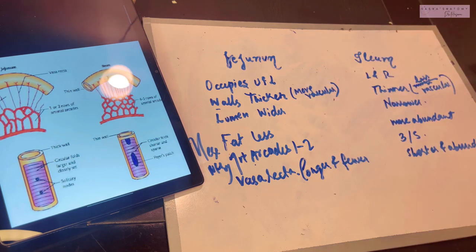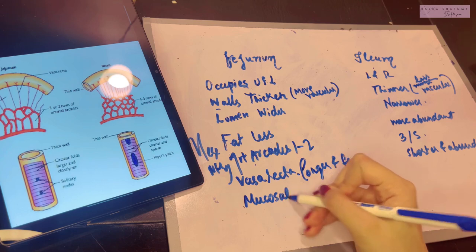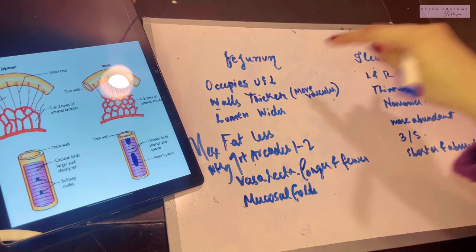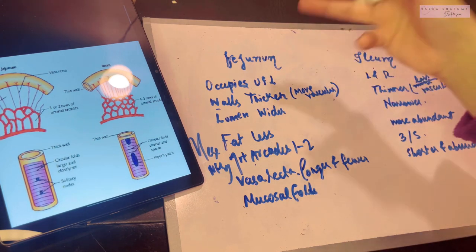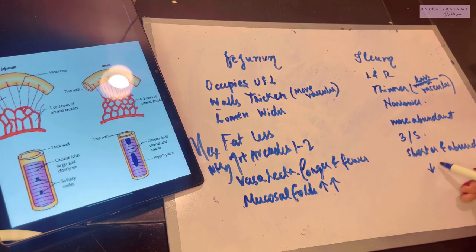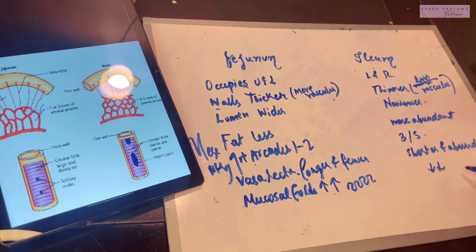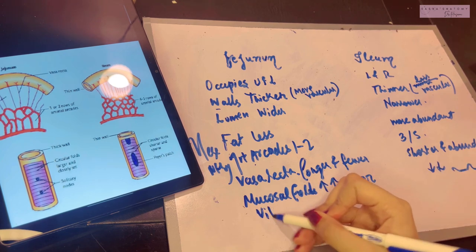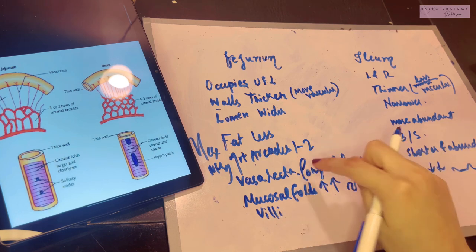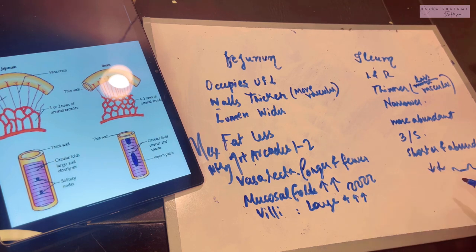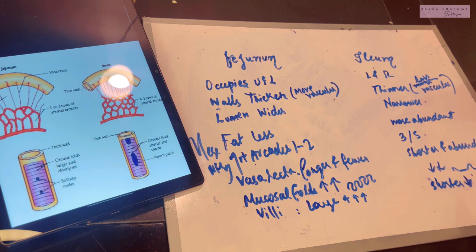Now the histological differences: the plica circularis, or mucosal folds, are far more abundant and closely spaced in the jejunum — since more absorption occurs there — whereas in the ileum they are very rare and far apart. Regarding villi, the jejunum has large and numerous villi described as leaf-like, whereas in the ileum the villi are shorter and fewer.